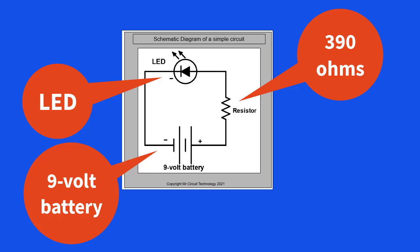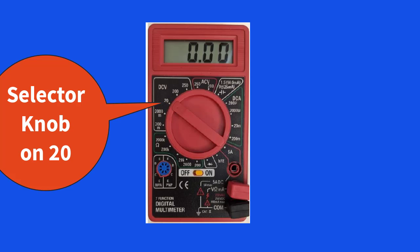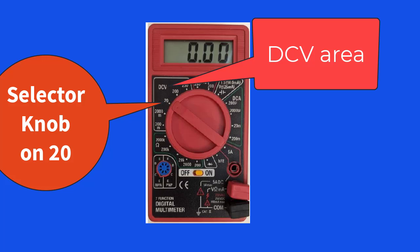We're going to measure the DC voltage across each of the components in the circuit. Being that we are powering the circuit with a 9-volt battery, we can set the selector knob to 20 on the volt range. That is the position labeled 20 in the DCV area.